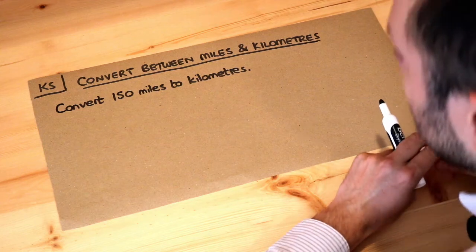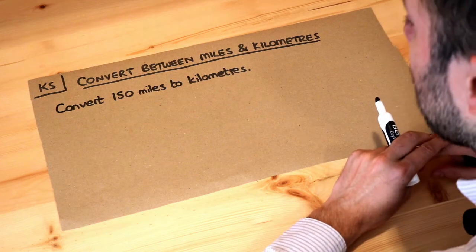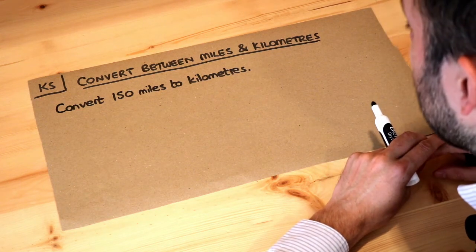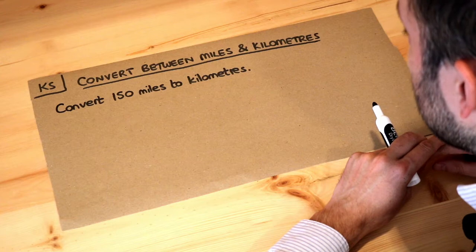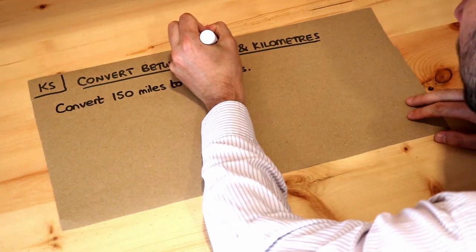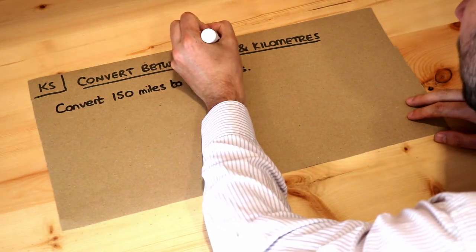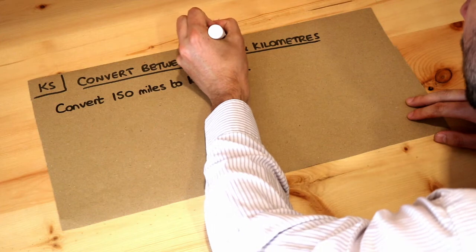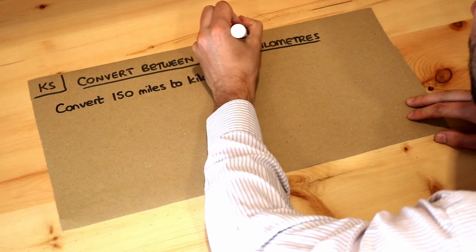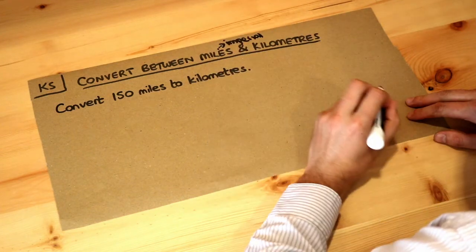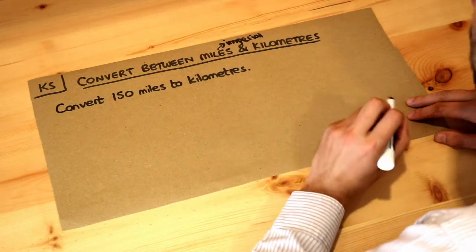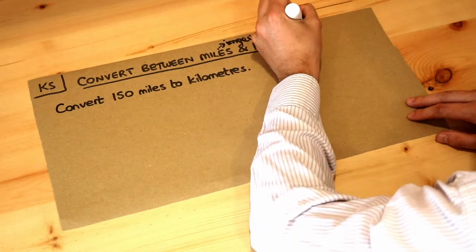Hello and welcome to this Dr. Ross Mass's key skill video on converting between miles and kilometres. Miles is an example of a unit for distance that is an imperial unit, and kilometres is an example unit for length which is metric.